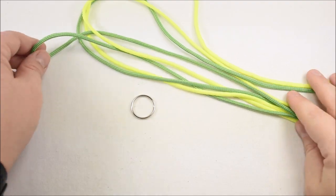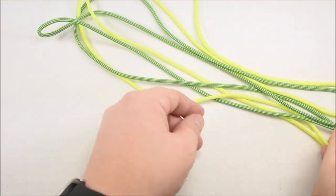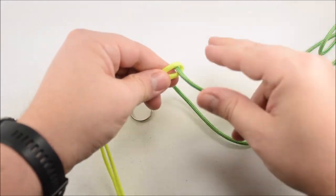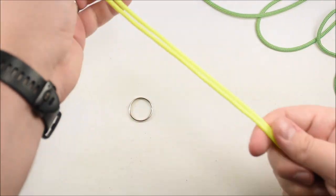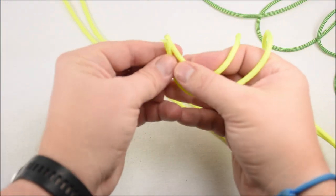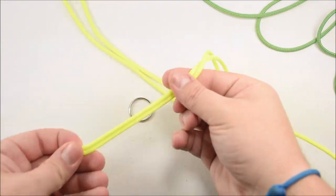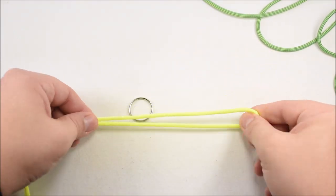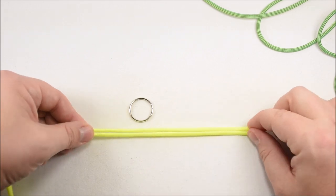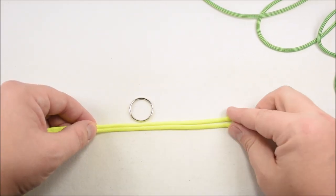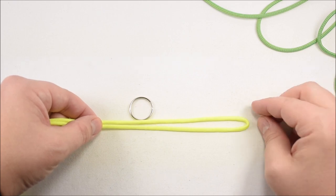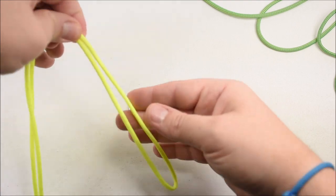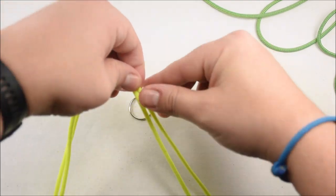First thing we're going to do is, it doesn't matter which one, but we're going to find the center. Let's do the yellow. So to find the center, just put your two strands together like so. Pull everything through. There's my center point. Real easy. Now we want to measure probably a good six inches. This is how long your keychain is going to be. I don't want to go quite that long, maybe four or five inches. Something just like that. And this is going to be your inner strands that we're going around.